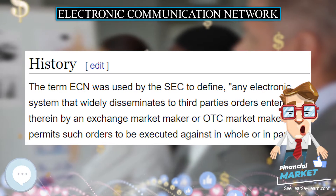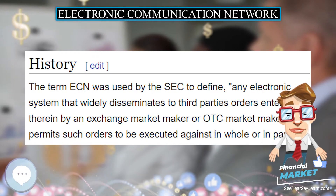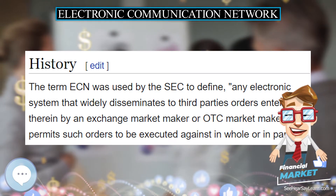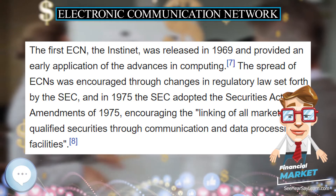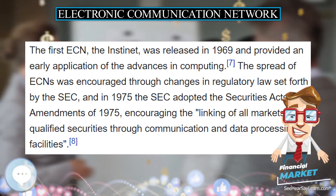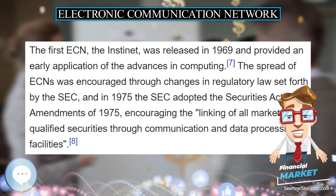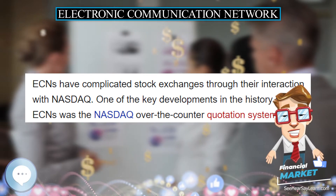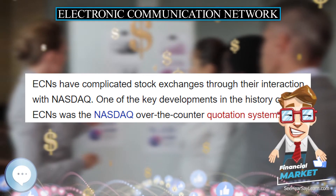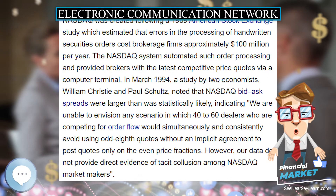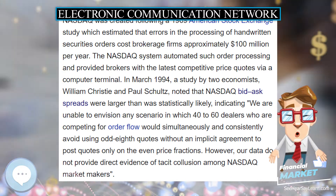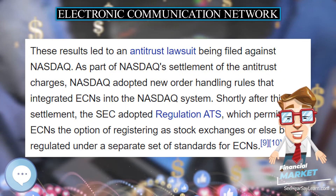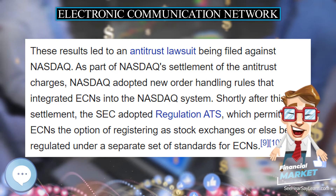Generally the buyer and seller are anonymous, with trade execution reports listing the ECN as the party. Some ECN brokers may offer additional features to subscribers such as negotiation, reserve size, and pegging, and may have access to the entire ECN book as opposed to just the top of the book, providing real-time market data regarding depth of trading interest.